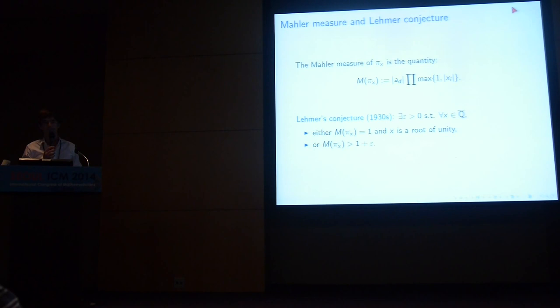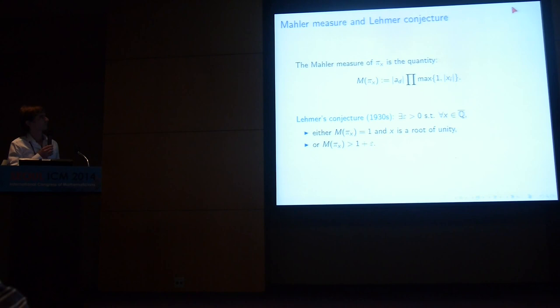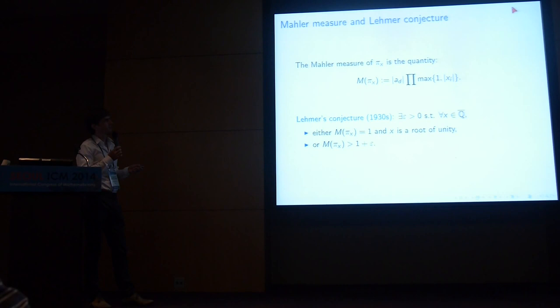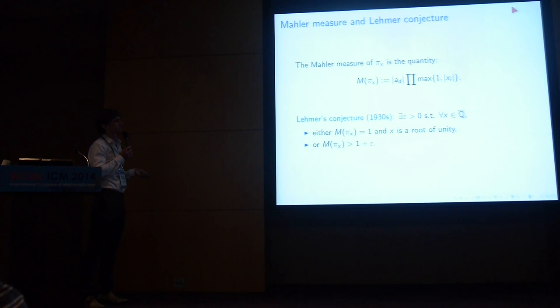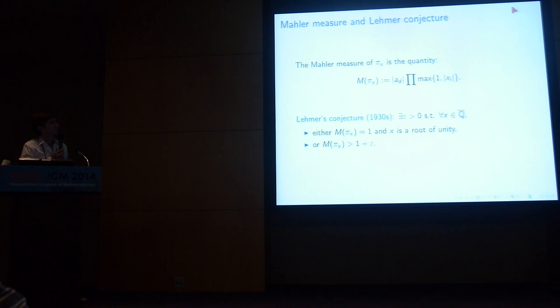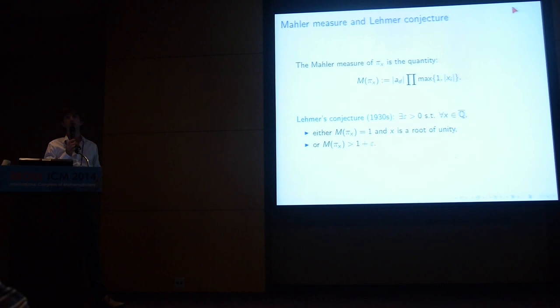There is a famous conjecture about the Mahler measure. The conjecture is that there is a gap between Mahler measures: the Mahler measure of an irreducible polynomial is either 1 or strictly bigger than 1 by a definite amount. A classical lemma in algebraic number theory — Kronecker's lemma — says that if the Mahler measure equals 1, then x must be a root of unity. So the only irreducible polynomials with Mahler measure 1 are cyclotomic polynomials.